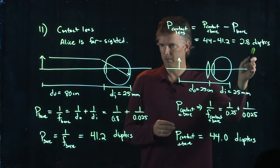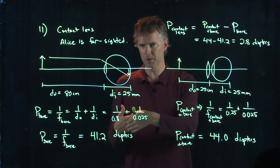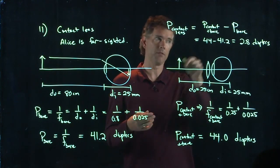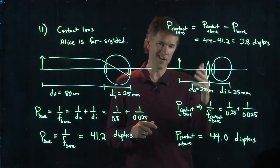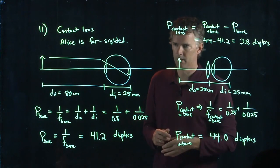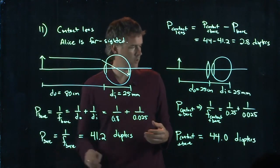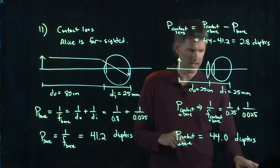And that sounds like a reasonable number, right? When you go to get your prescription, what does it say? It says plus 2.8 or plus 3.5 or negative 3 or negative 2. And that's the power that you're adding with this contact lens.